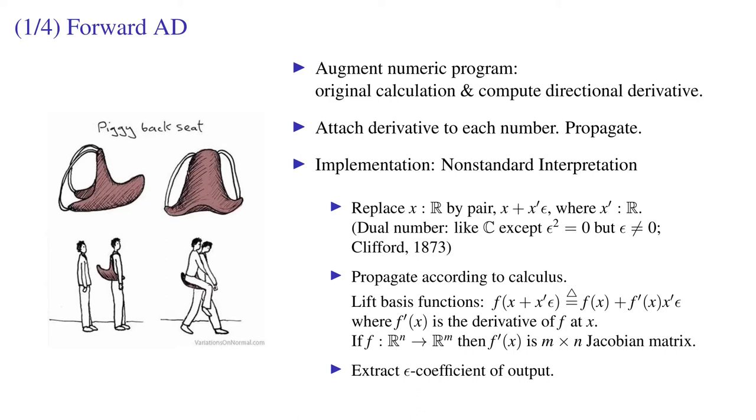In forward automatic differentiation, derivatives are piggybacked on primal values. So, we have x plus x prime epsilon. x is the primal. x prime is the derivative value called a tangent. This is like a dual number. Like a complex number inside the computer, it's represented as a two-element pair.